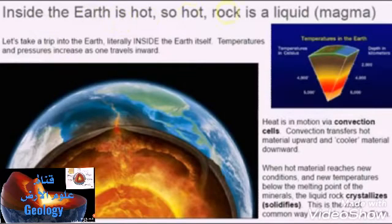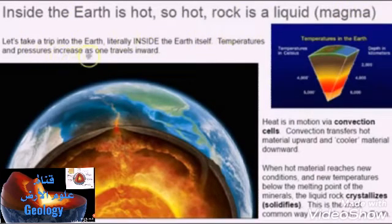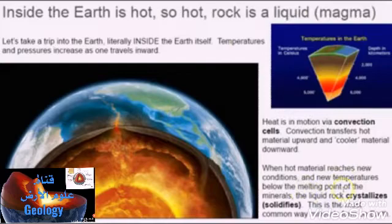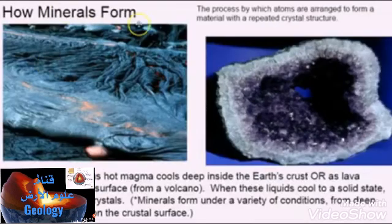Inside the earth it is so hot that rock is a liquid — this is called magma. Temperatures and pressures increase as one travels inward toward the core. Heat moves via convection cells, transferring hot material upward and cooler material downward. When hot material reaches temperatures below the melting point of minerals, the liquid rock crystallizes or solidifies. This is one of the most common ways minerals form on earth.